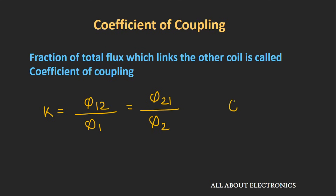The value of K is between 0 and 1. If K = 1, the coupling between the two coils is 100%. If K = 0, there is no coupling between the two coils.